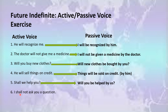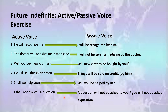Number six: 'I shall not ask you a question.' This is a negative sentence. In this sentence 'you' and 'a question' are the direct and indirect objects. If you take out 'you' at the start, your sentence looks like: 'You will not be asked a question.' If you take out 'a question' at the start, you say: 'A question will not be asked to you.'